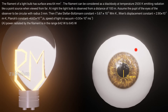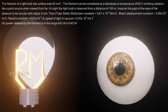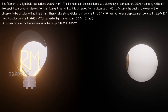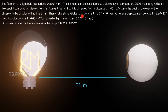This is an eyeball and the pupil has a radius of 3 millimeter. The observer is at a distance of 100 meters from the source. The constants given are: Stefan-Boltzmann constant, Wien's displacement constant, Planck's constant, and speed of light in vacuum.